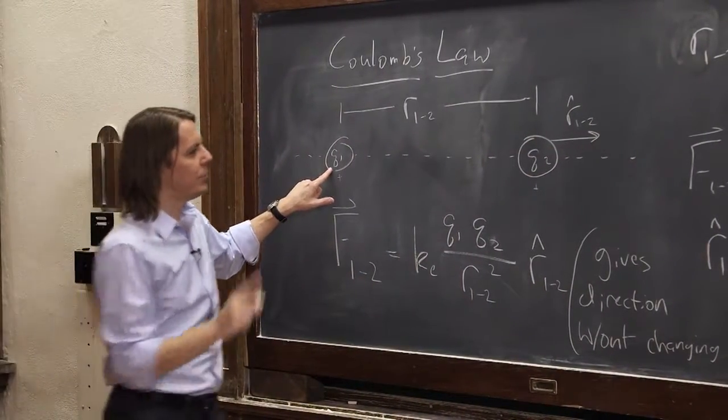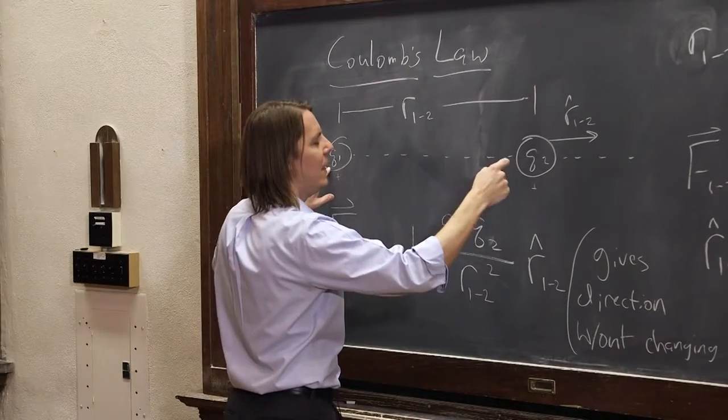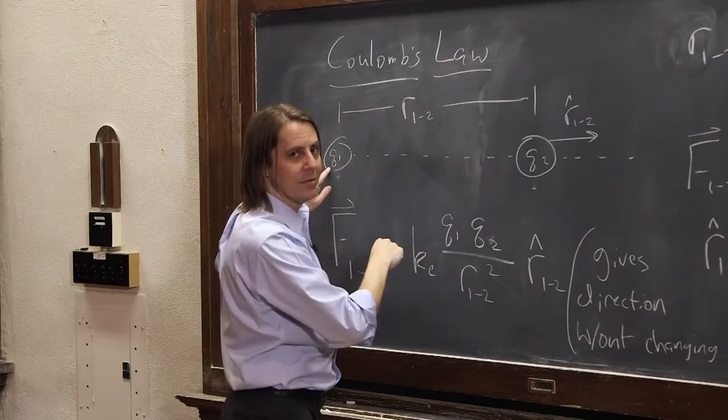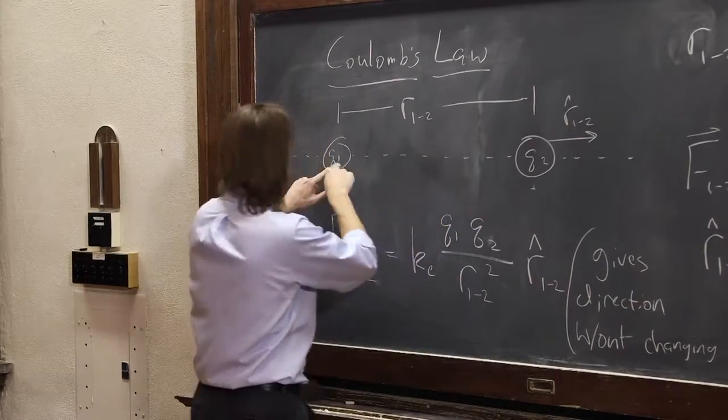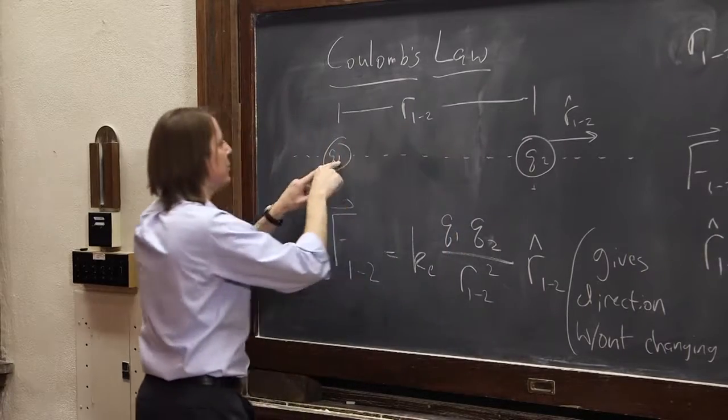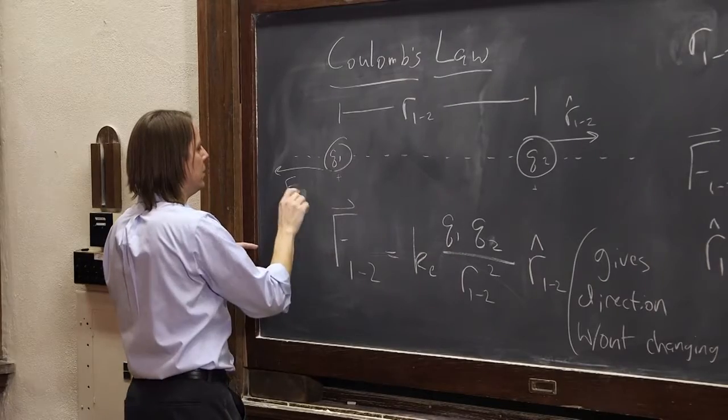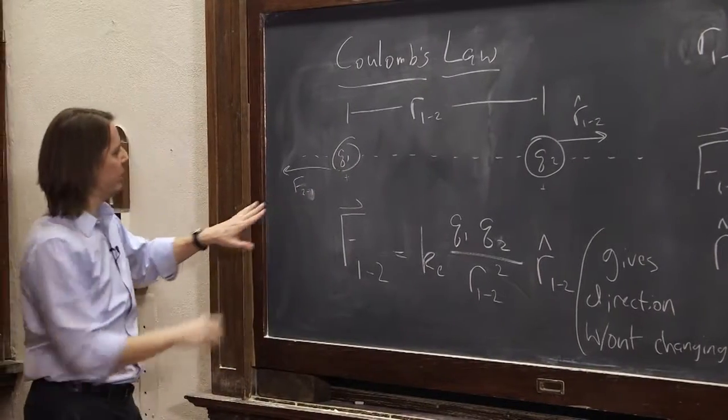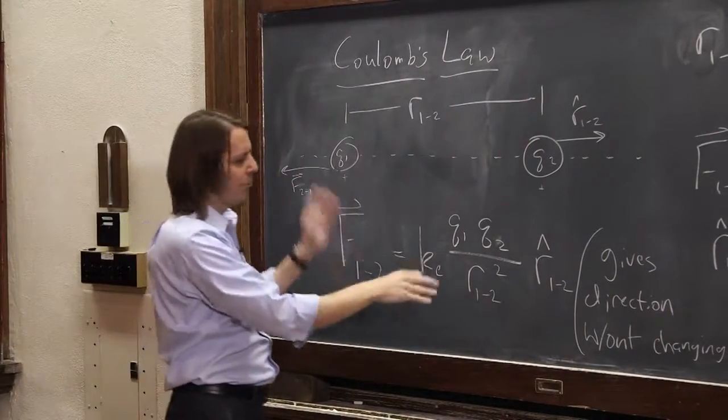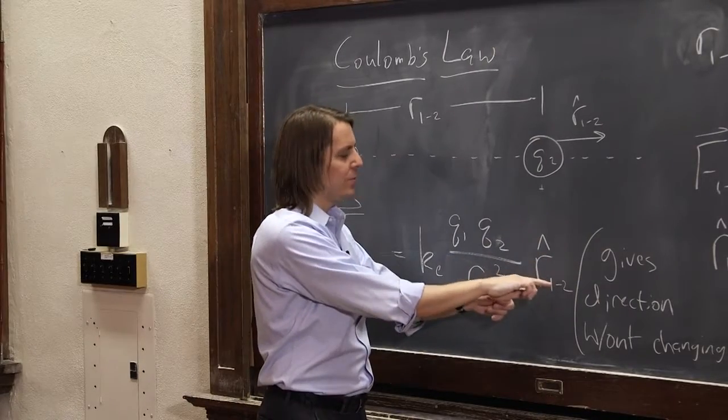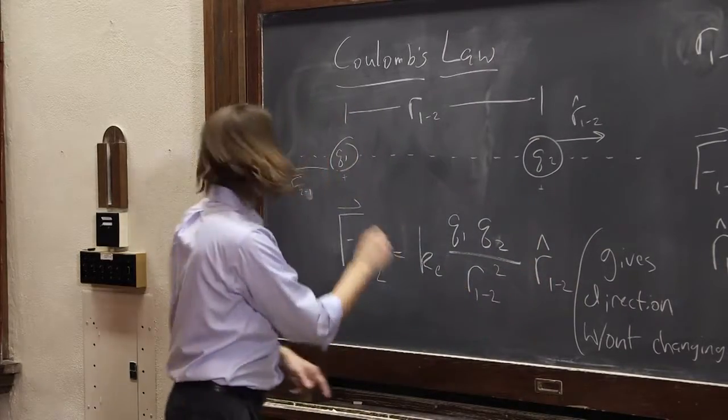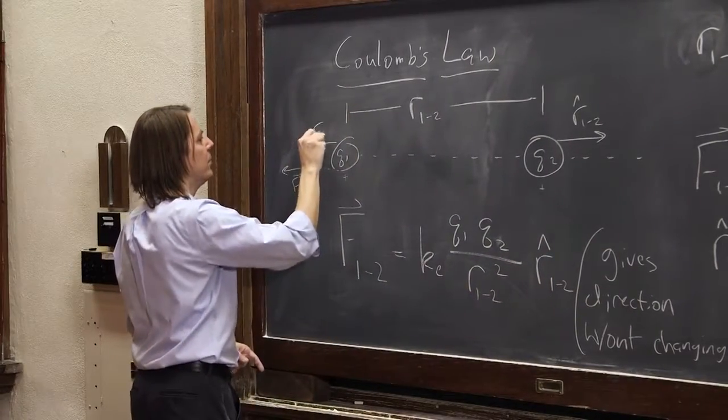What about this one? Well, this one, the force would be F2,1. You switch everything. The force this one experiences, the force 2 applies to this one, is this way. F2,1. And you plug in all the numbers, positive, everything's positive. But then the unit vector would also be R hat 2,1. So the unit vector's in the right direction.